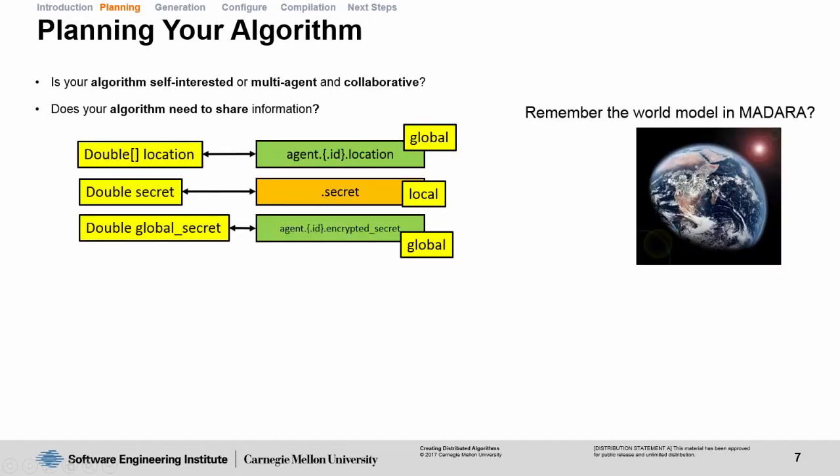Now that we've talked about algorithms and agents, let's talk about how to plan your algorithm. The first question you should ask yourself is: is your algorithm self-interested or does it actually care about the other agents in your system? The second question to ask yourself is: does my algorithm need to share any information with other agents? Remember that world model in MADARA? MADARA gives us a way to keep local information or to share it globally. The way it does this is with a period.